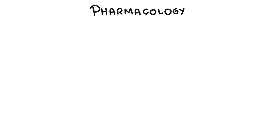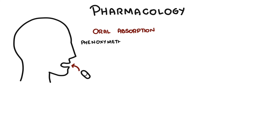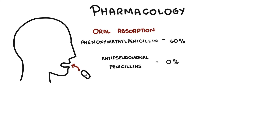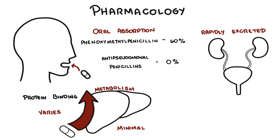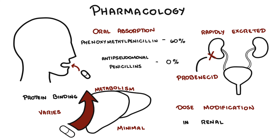Penicillins differ markedly in their oral absorption. For example, phenoxymethylpenicillin is 60% orally absorbed, whereas anti-pseudomonal penicillins have zero oral absorption and are usually given parenterally, IV. They vary in their degree of protein binding, and metabolism is minimal. Penicillins are rapidly excreted via renal tubular cells, and excretion may be blocked by probenecid, a medication used in gout. Dose modification is important in renal failure.